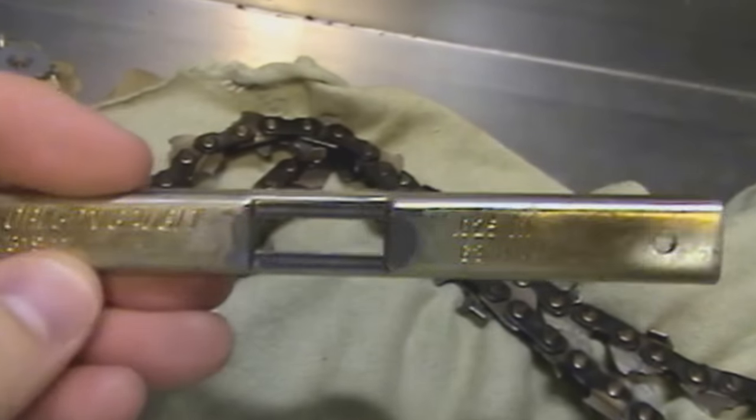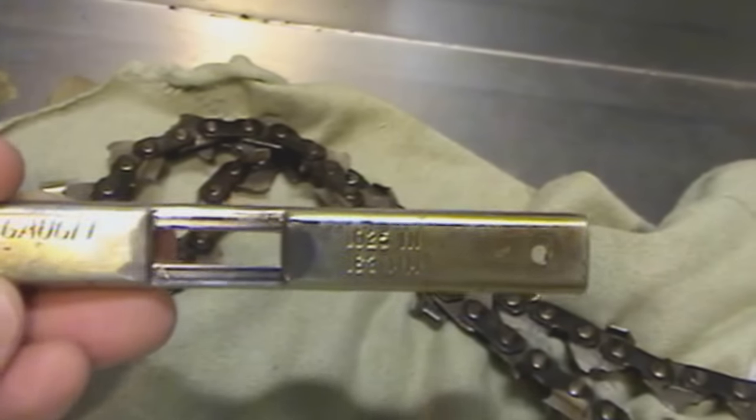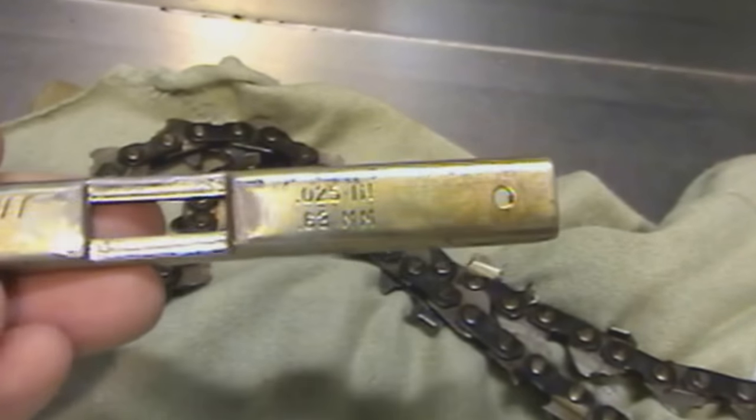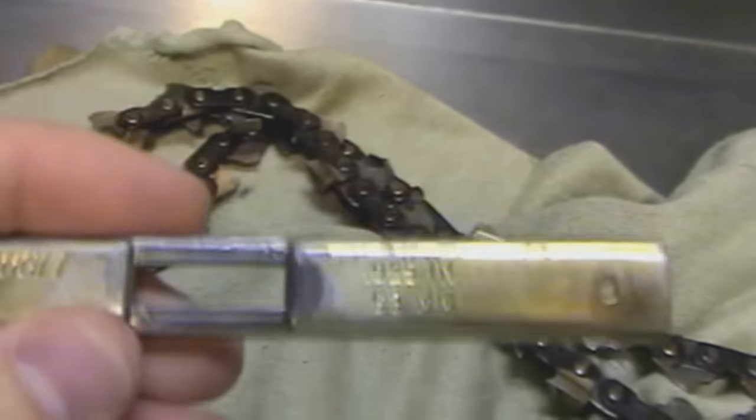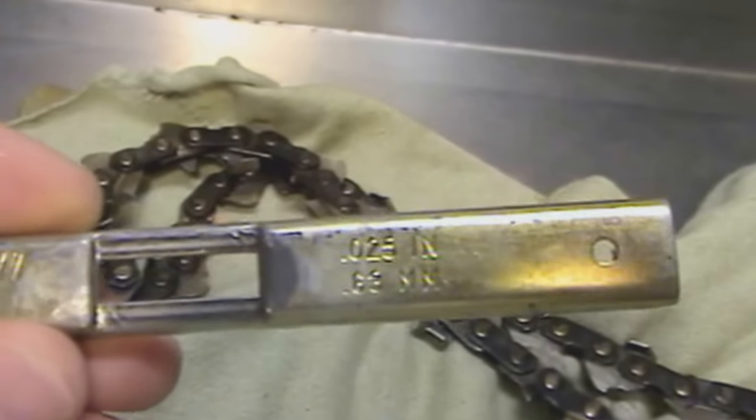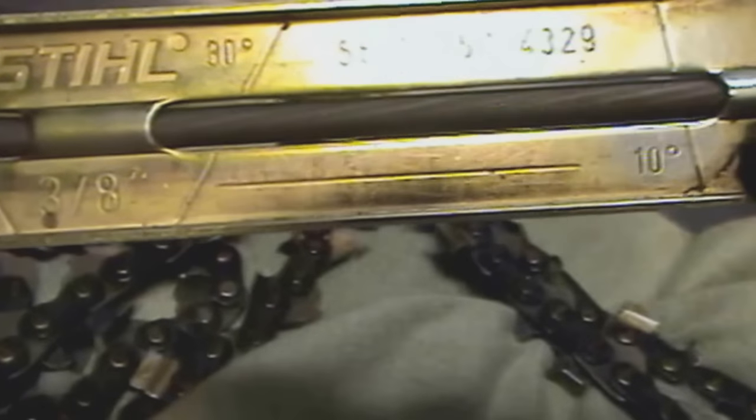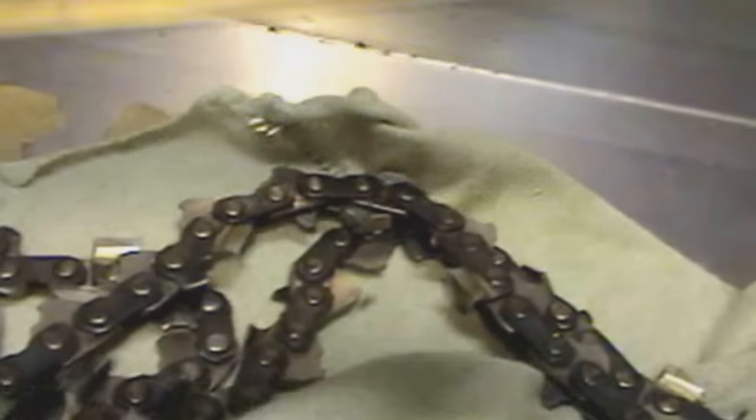This here is a very basic depth gauge tool. Now Carlton makes the best tool on the market. They call it a file plate. That'll work with filing your tooth and lowering your depth gauges. But for the beginner this is just much easier to use. This guide is for three-eighths chain. I prefer to use the 13/64 files. Some like the 7/32nd but I prefer the 13/64. It's just slightly smaller in diameter. It seems to cut a little bit quicker. It gets under the tooth a little bit easier.